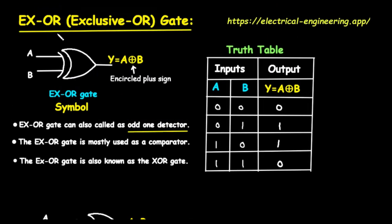Let's start with the basics. EXOR stands for exclusive OR gate. The EXOR gate symbol is very similar to the standard OR gate symbol, but with an extra curved line on the input side. This extra line signifies its exclusive nature. It has two input lines, labeled A and B, and one output line, labeled Y. The logical expression is written as Y equals A ⊕ B, where the encircled plus sign represents the exclusive OR operation.